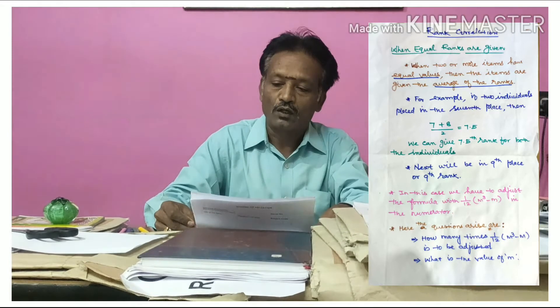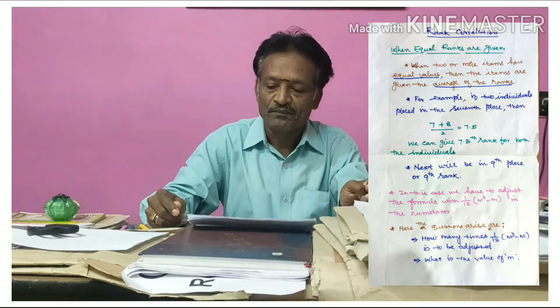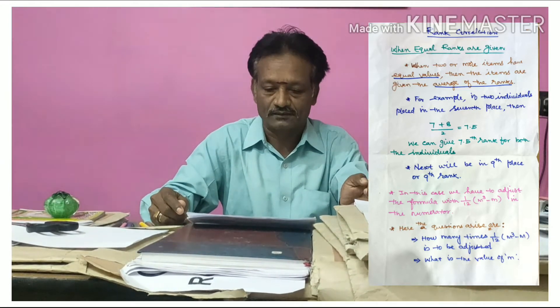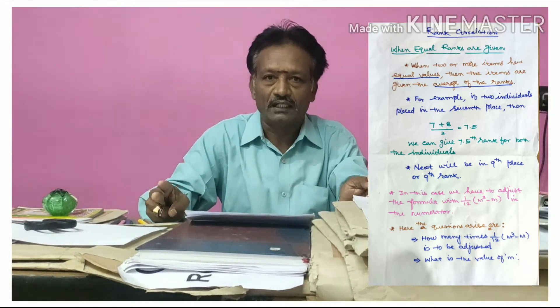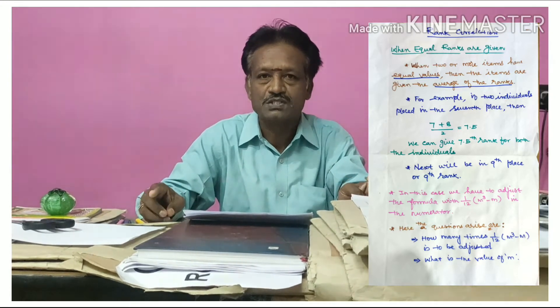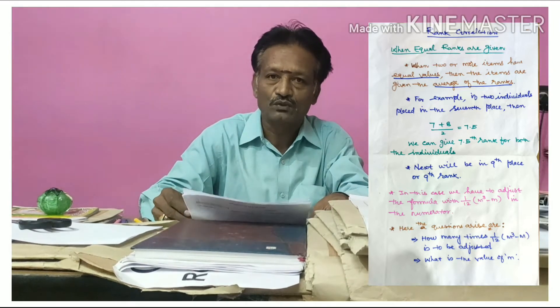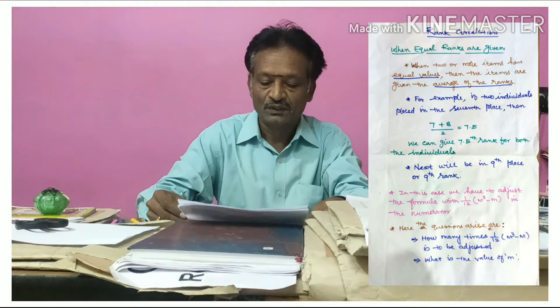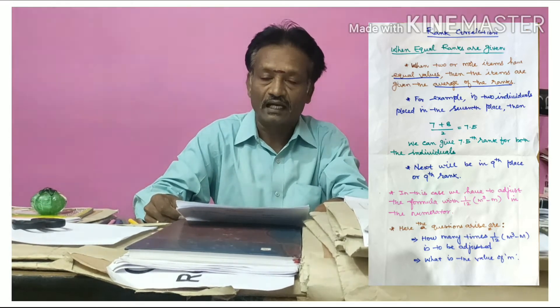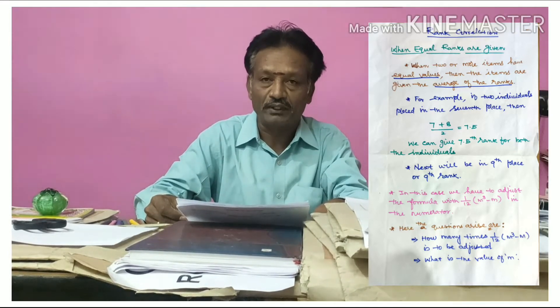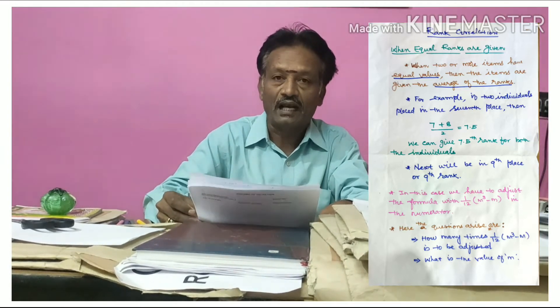When two or more items have equal values, the items are given the average of the ranks. For example, if two individuals are placed in the 7th place, then the 7th and 8th places are both used, so 7 plus 8 divided by 2 equals 7.5. We assign rank 7.5 to both individuals. The next rank assigned will be 9th, not 8th, since places 7 and 8 are already used.